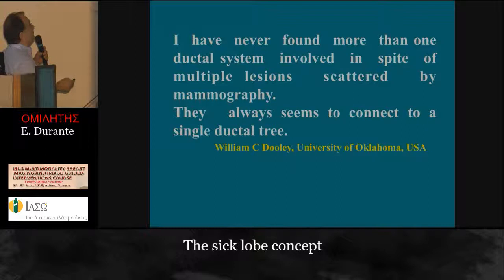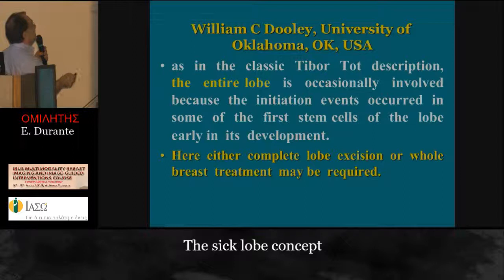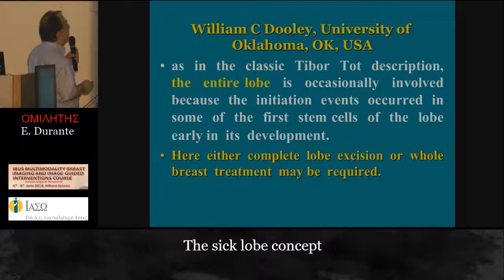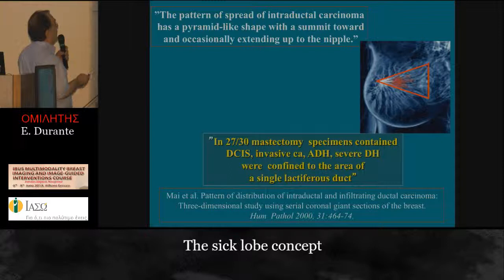Dolly, pathologist at the University of Oklahoma, stated: 'I have never found more than one ductal system involved, in spite of multiple lesions scattered on mammography — they always seem to connect to a single ductal tree.' Dolly also said, as in the classic Tibor Toth description, the entire lobe is occasionally involved because the initial events occurred in some of the first stem cells of the lobe early in its development, and in that case either complete lobe excision or whole breast treatment might be required. The pattern of spread of intraductal carcinoma has a pyramid-like shape with a summit toward — and occasionally extending to — the nipple. In 27 of 30 mastectomy specimens containing DCIS, invasive carcinoma, lobular hyperplasia, and sclerosing adenosis were all confirmed to the area of a single active duct.